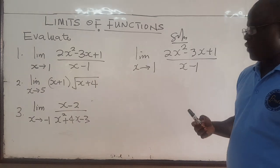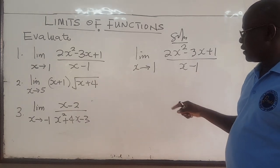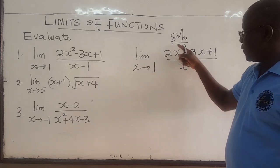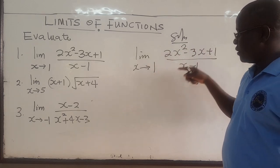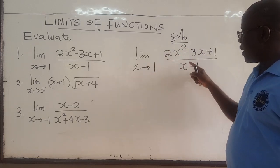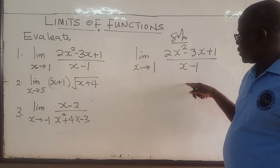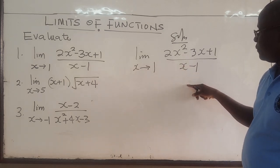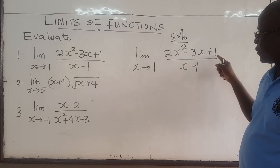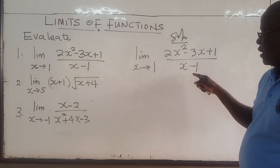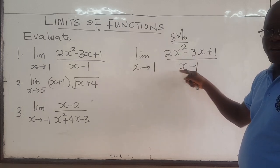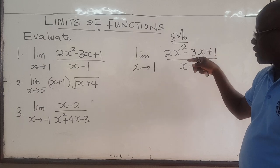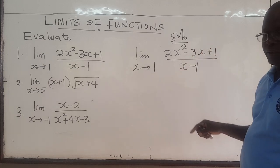Immediately what you should recognize is that 1 here is not in the domain of this function. When x is 1, this goes to 0, which means that you need to factorize this somehow and see if this will cancel out the factor x minus 1. If it will cancel out, then you can find the limit.